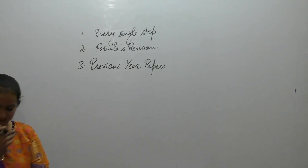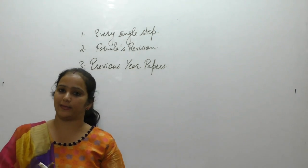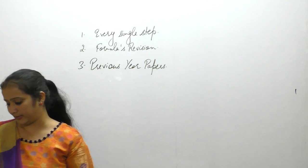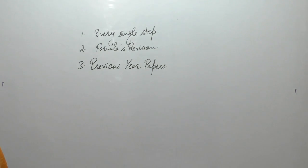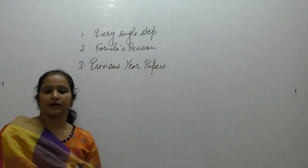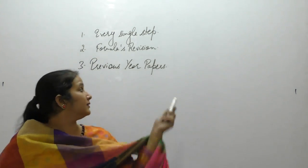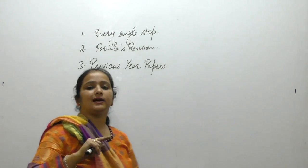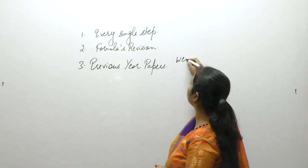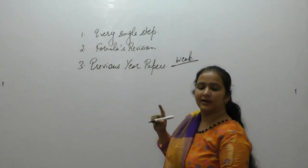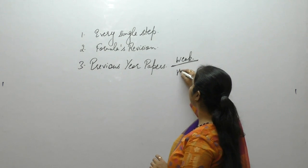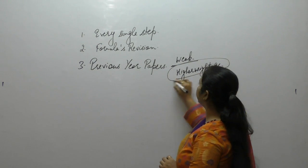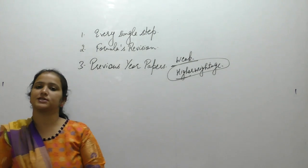Avoid silly mistakes in the paper. Your speed should be high from the beginning so that the paper doesn't remain incomplete — the paper may be lengthy or may not be. While revising, concentrate on your topics, keep a separate notebook for revision of formulas, study basic concepts, and give extra attention to the topic you feel is weaker. Also give extra practice to topics with higher weightage in the paper.